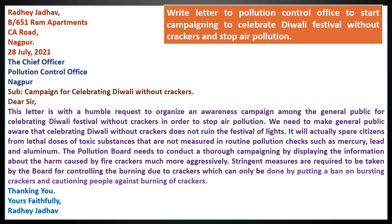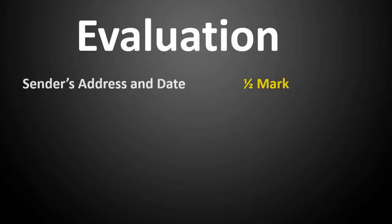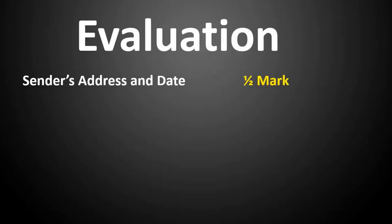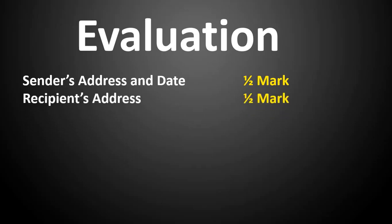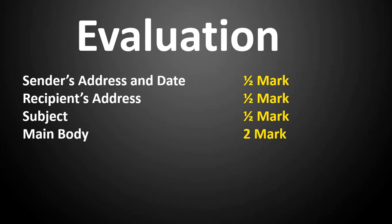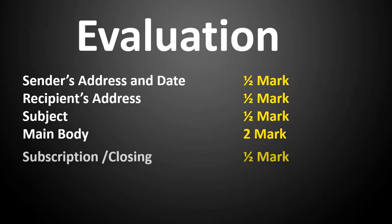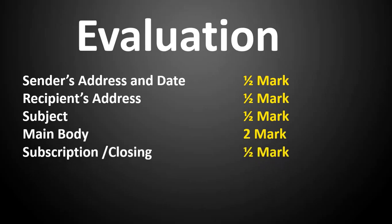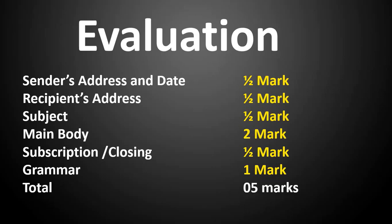You are going to be evaluated considering these points: sender's address and date — half mark; recipient's address — half mark; subject — half mark; main body — two marks; subscription or closing — half mark; and grammar — one mark. Totally five marks you will get according to these points.